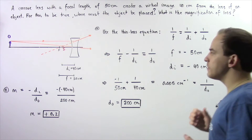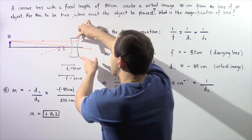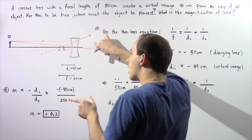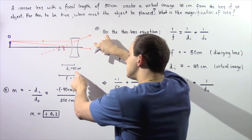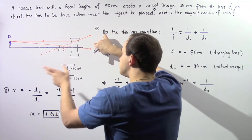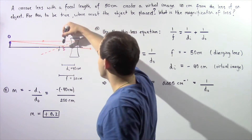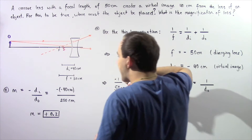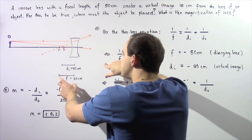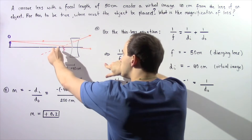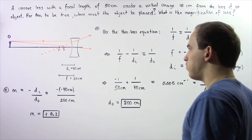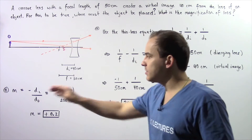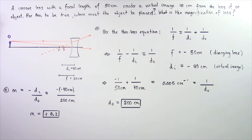Let's begin with the following diagram. We have our diverging lens, also known as a concave lens. We place our virtual image a distance of 40 centimeters to the left of our lens as shown in the diagram. This eye represents our image. Our focal length of the lens is 50 centimeters, and this dot F represents our focal point. We essentially want to find the object distance and then the magnification.